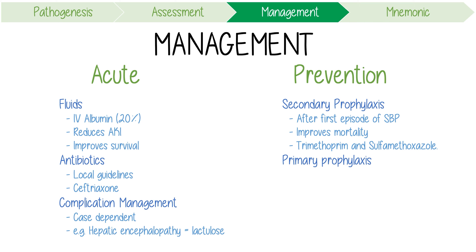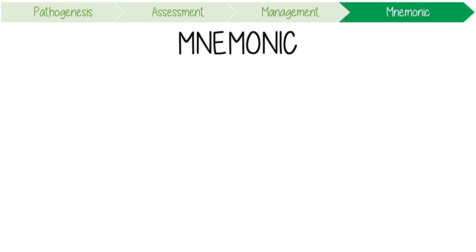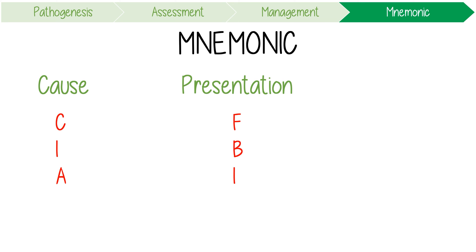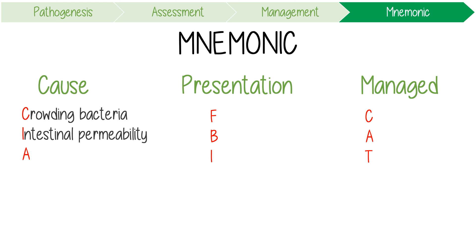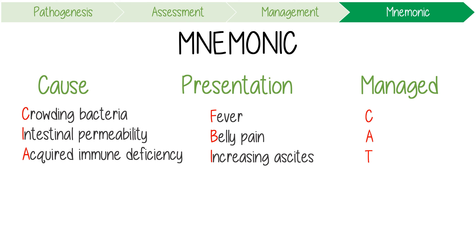Primary prophylaxis is only recommended for patients at very high risk. To remember all of this: SBP is probably caused by the CIA (crowding of bacteria, increased intestinal permeability, and acquired immune deficiency), it presents with the FBI (fever, belly pain, and increasing ascites), and it can only be managed with CATS (ceftriaxone, albumin, trimethoprim-sulfamethoxazole for prophylaxis).